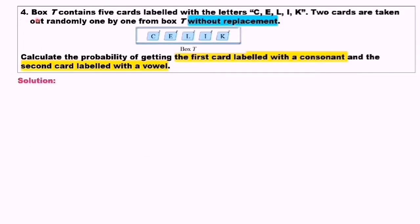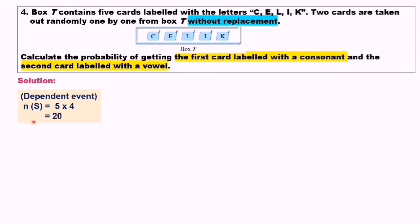Question number 4. Box T contains 5 cards labelled with the letters C, E, L, I, K. Two cards are taken out randomly one by one from Box T without replacement. Calculate the probability of the first card being labelled with a consonant and the second card labelled with a vowel. The keyword is 'without replacement,' meaning this is a dependent event — after one card is taken out, only 4 cards remain. The number of sample space equals 5 times 4, which equals 20.